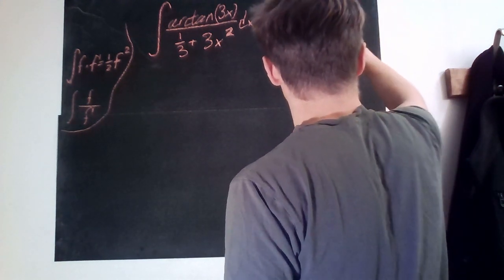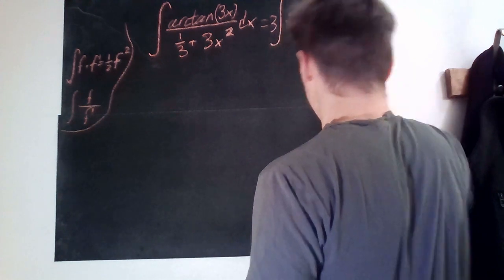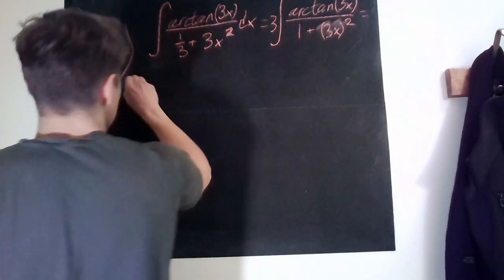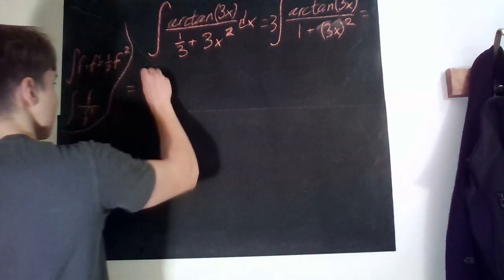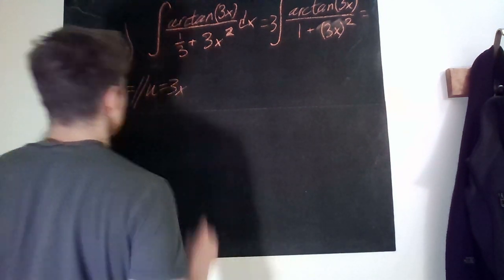Which you obviously can write as 3x squared. And now, a variable substitution with u being equal to 3x looks very suitable.